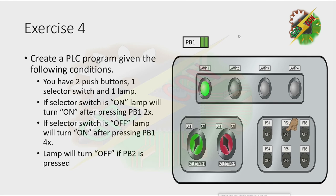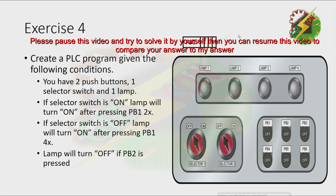Then let's press PB2. Now let's turn off the selector switch. Let's press PB1 and that's it. Now let's press PB2. I want you to pause this video and try to solve it by yourself. Then after that, you can resume this video so that you can compare your answer to my answer.